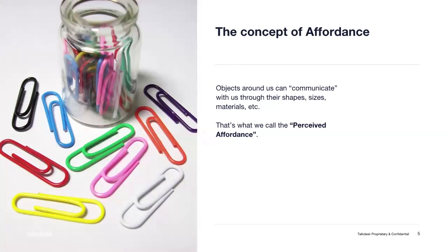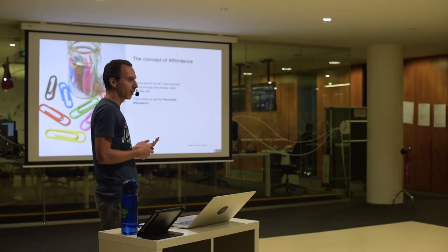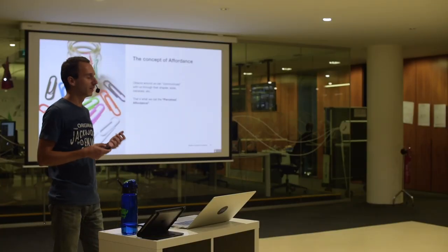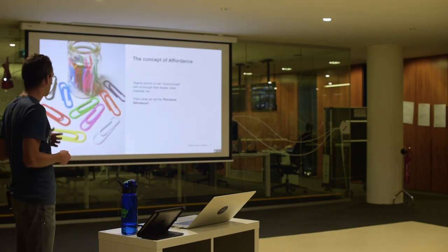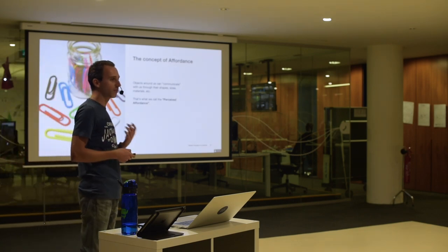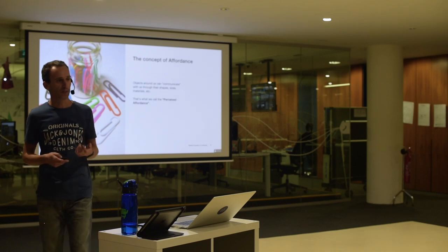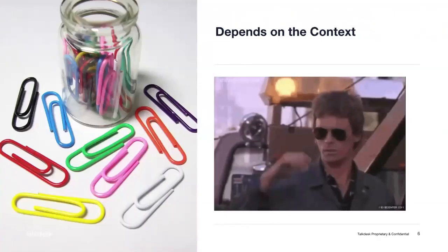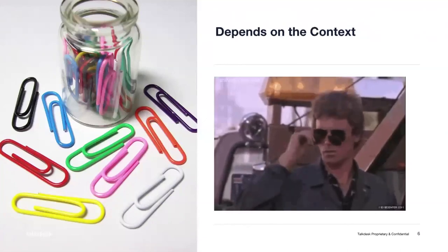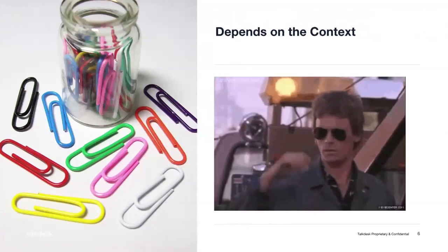Sometimes it's not obvious — we need experience or a different context to know how to use an object. For example, a paperclip. The shape of the object isn't clear at first, but once you understand it, you know exactly what it does — you use it to join pieces of paper together. But all affordances depend on context. A different person with different experience might look at the same object and see a totally different use. MacGyver could use a paperclip to diffuse a bomb. Depending on context, the usage is very different for the same object.